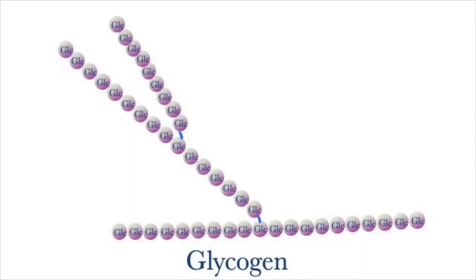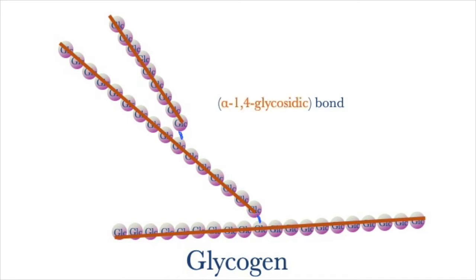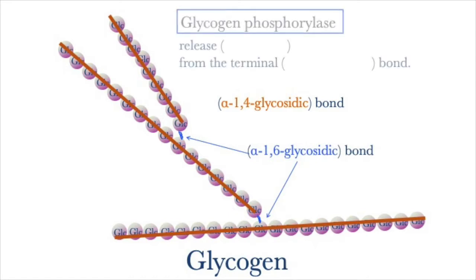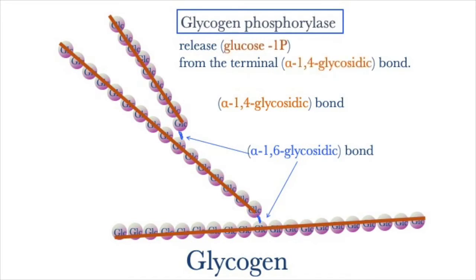Glycogen consists of linear stretches of glucose residues connected by alpha-1,4 bonds, with branches that attach via alpha-1,6 bonds. Glycogen phosphorylase catalyzes the release of glucose-1-phosphate from the terminal alpha-1,4 glycosidic bond.